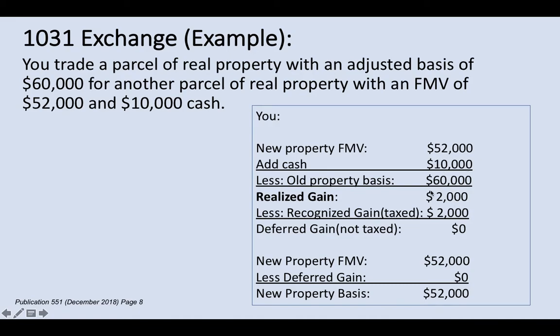That makes your realized gain $2,000. In a 1031 exchange, the realized gain is not necessarily taxable — it may be taxable, may not be taxable, or maybe partially taxable. That's the realized gain, which is different from what's called the recognized gain.